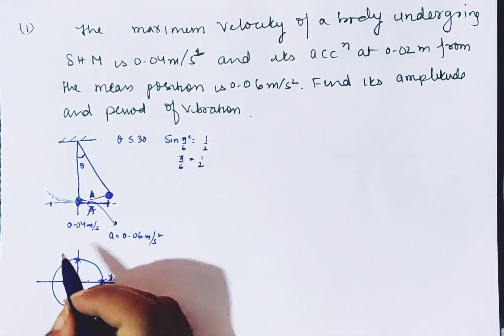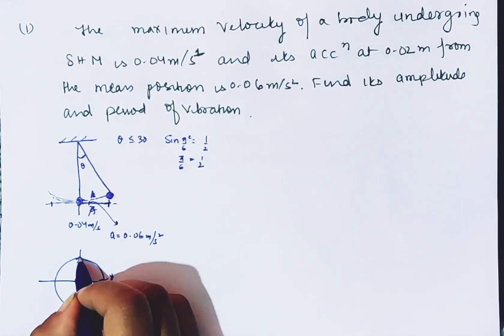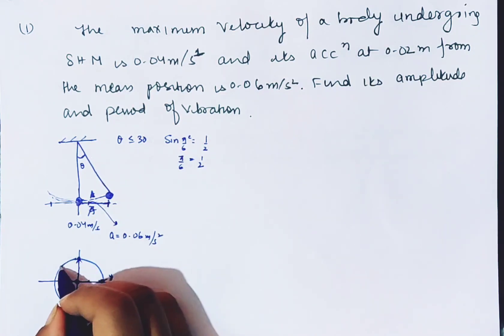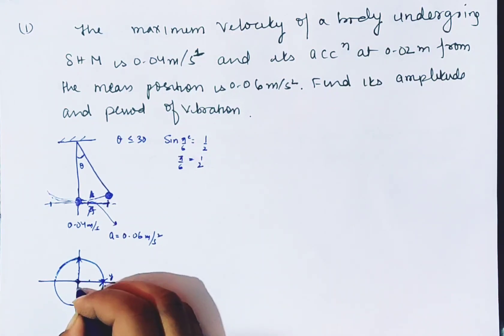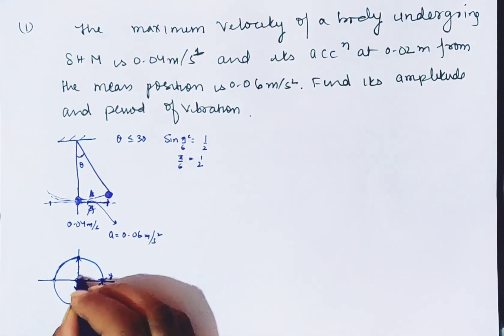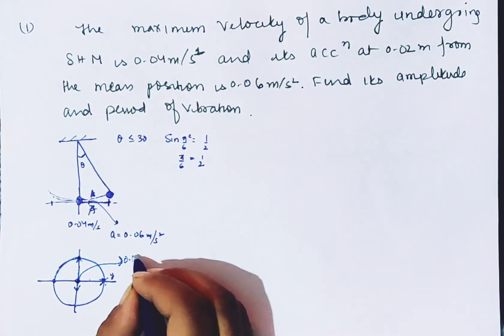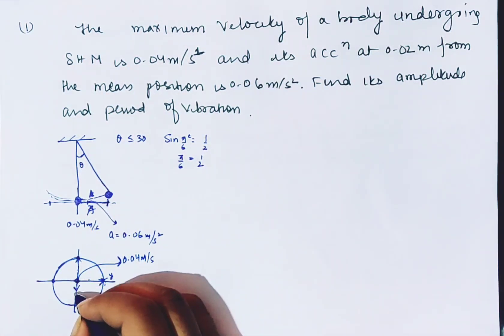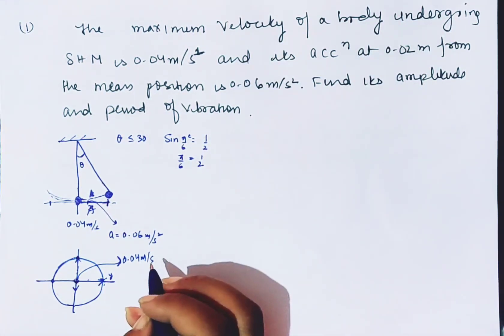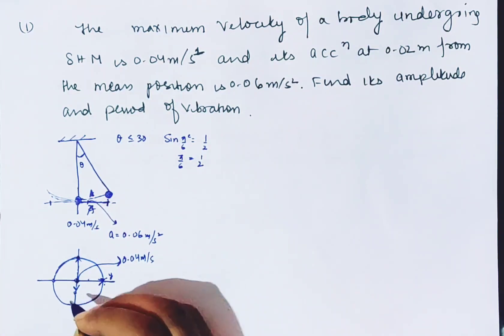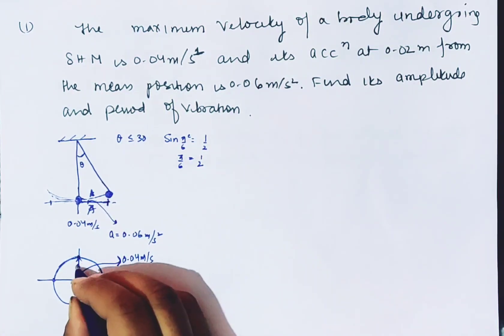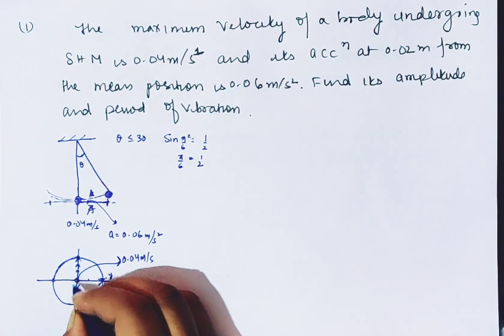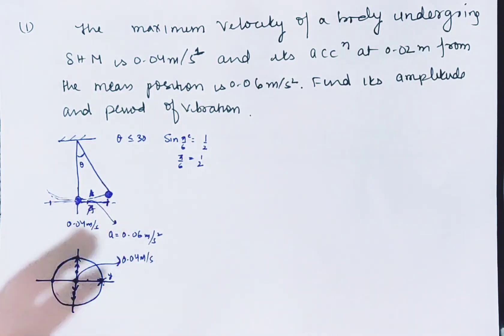The particle is at the speed of maximum velocity 0.04 and acceleration at 0.02 from the mean position. So we can assume that particle is here. If we take pendulum as a case, this is the maximum speed at the mean position. Here is 0.04 meter per second, and at 0.02 from the mean position, the acceleration is 0.06.